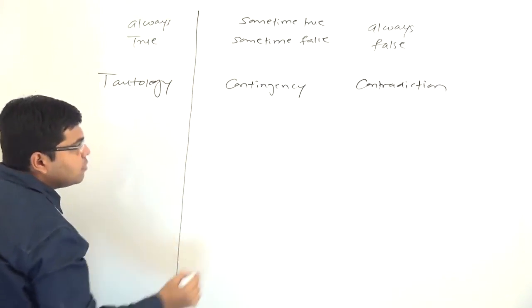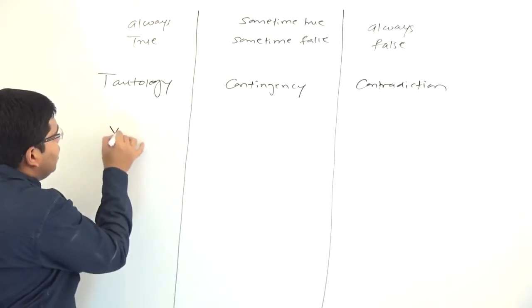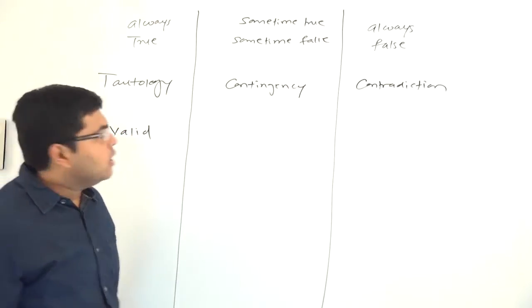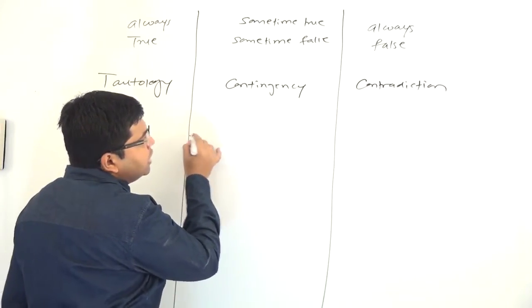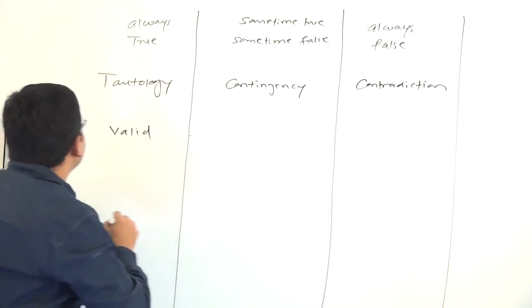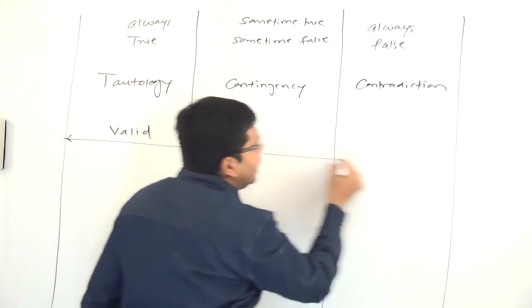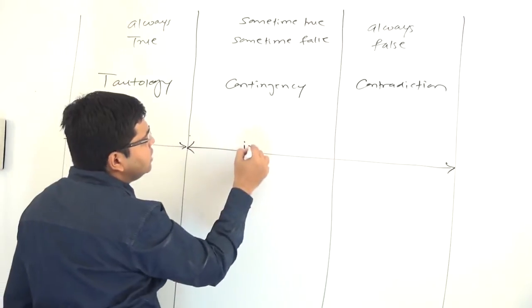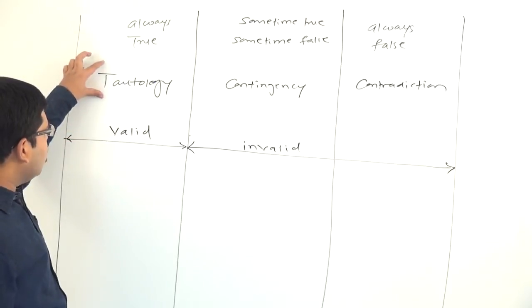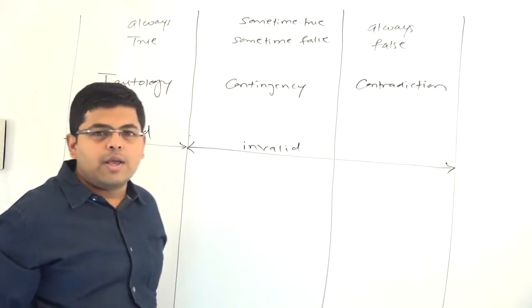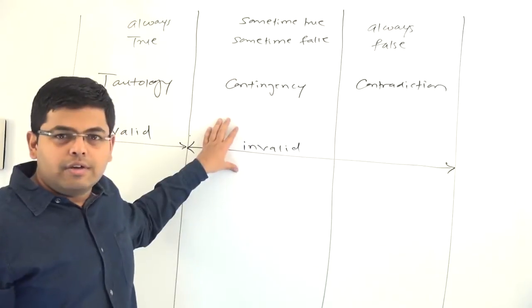A formula which is always true is also called a valid formula; otherwise it is called an invalid formula. So, if a formula is a tautology it will be called valid, otherwise it will be called invalid. Both contingency and contradiction can be called invalid formulae.